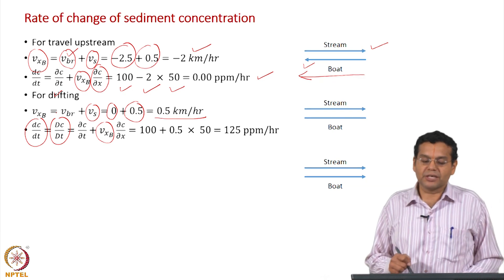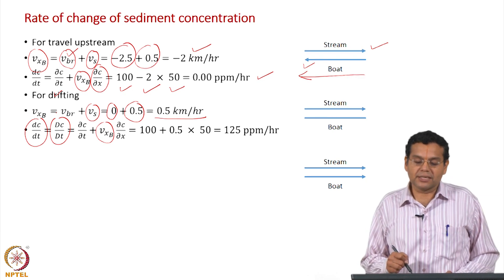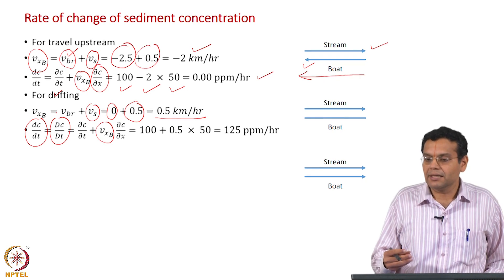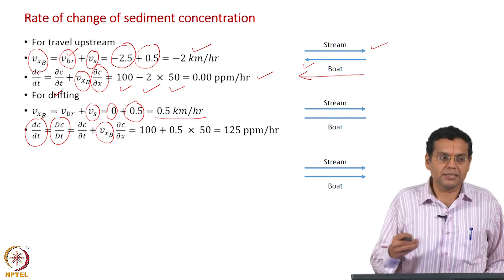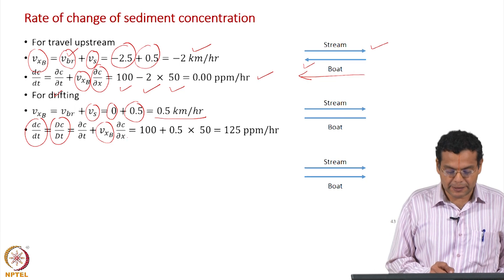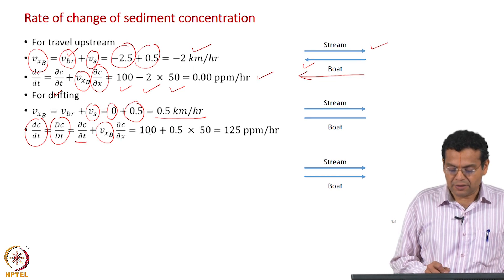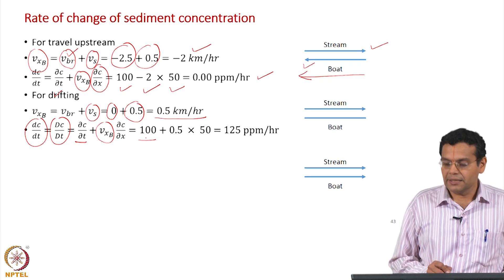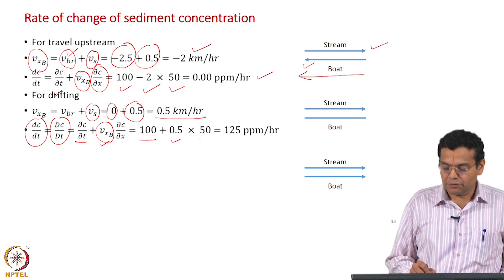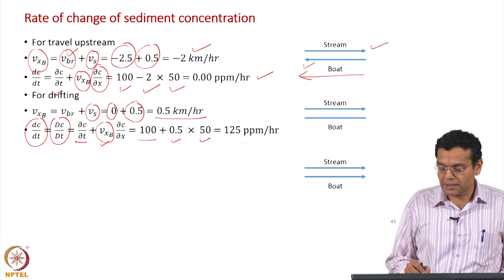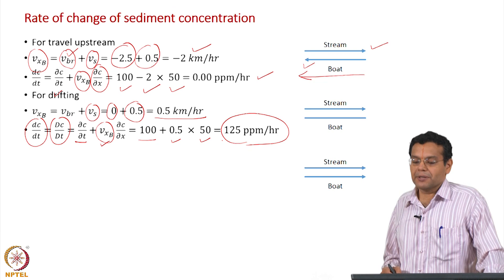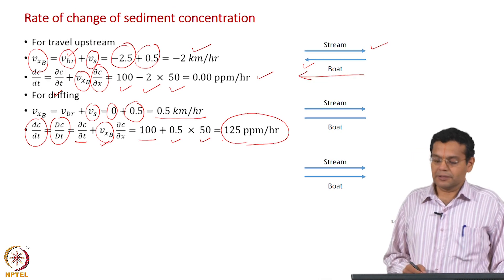This is also an objective of the example: to differentiate between a general dc/dt and the capital Dc/Dt (substantial derivative). Substituting: the rate of change of concentration is 100 + (0.5)(50) = 125 ppm per hour.